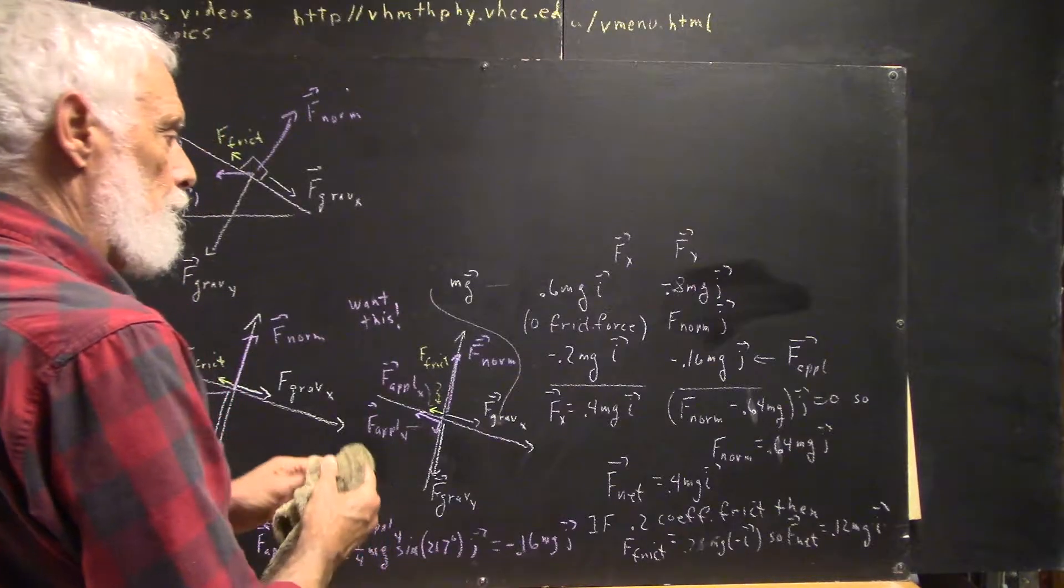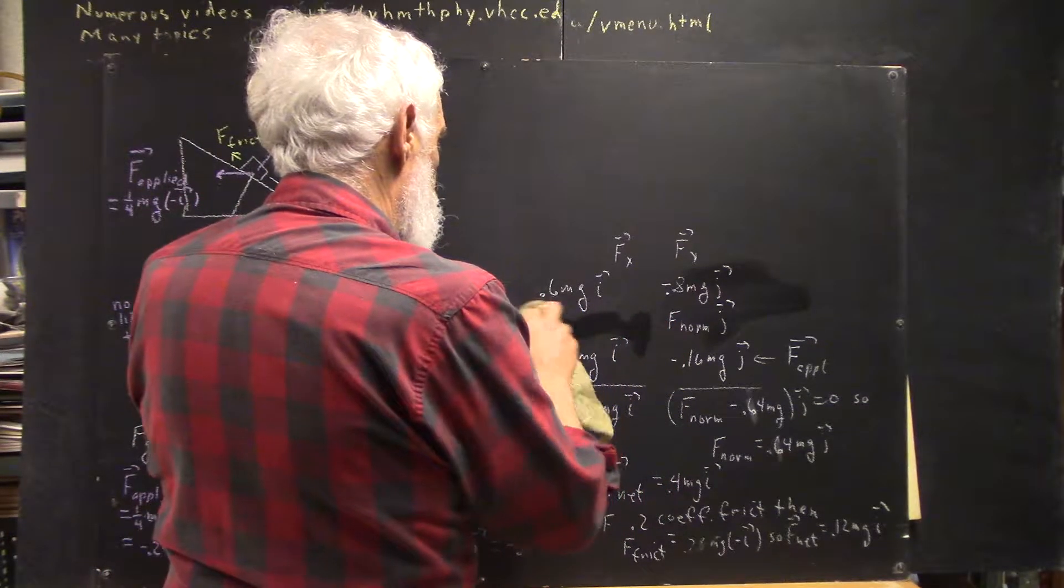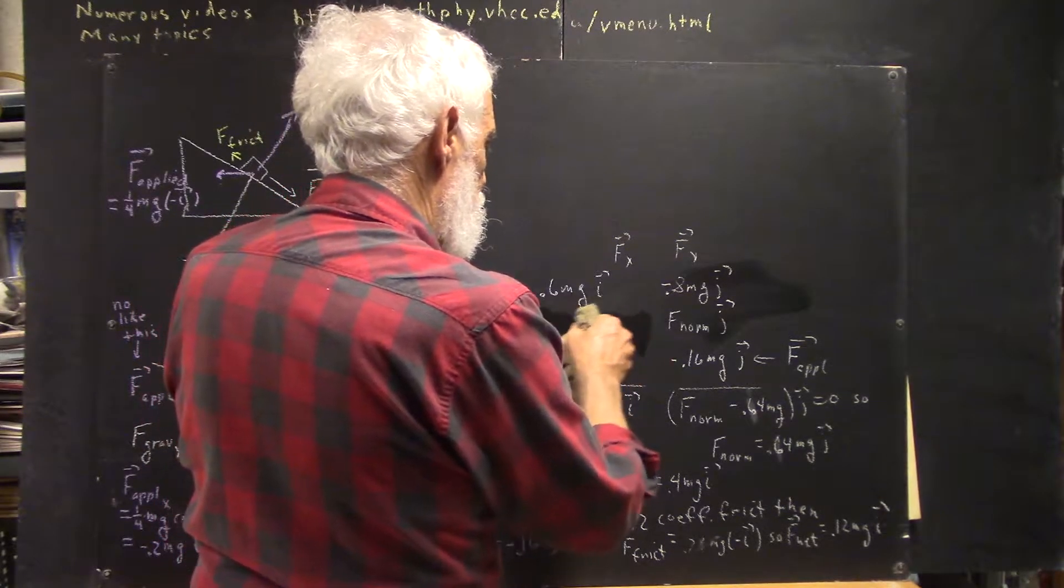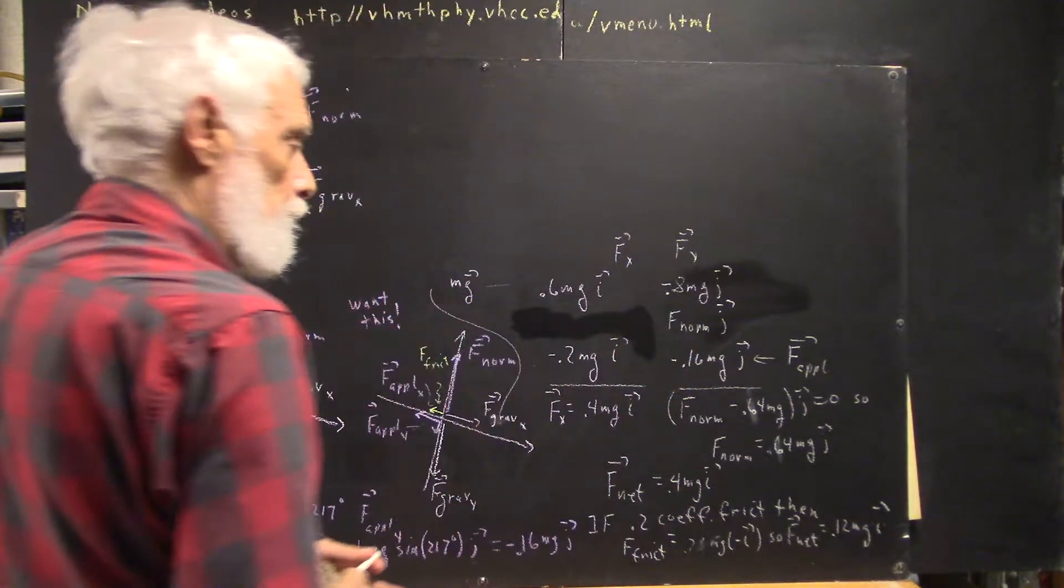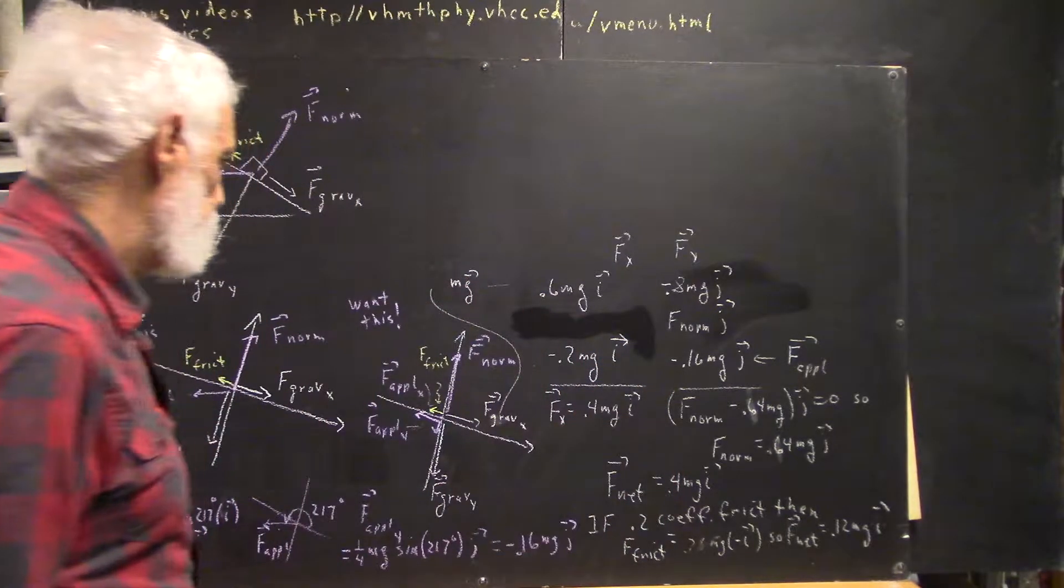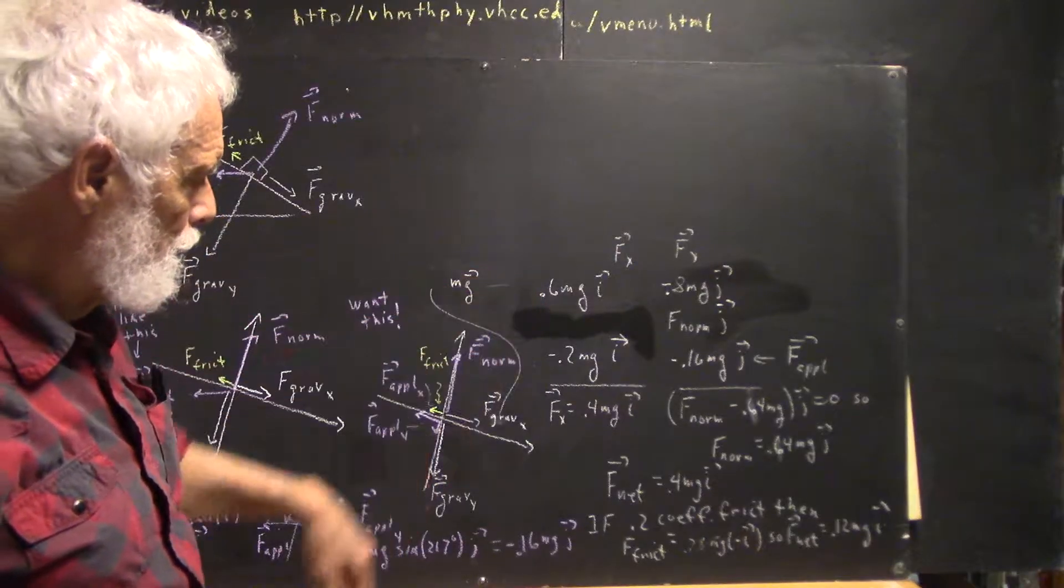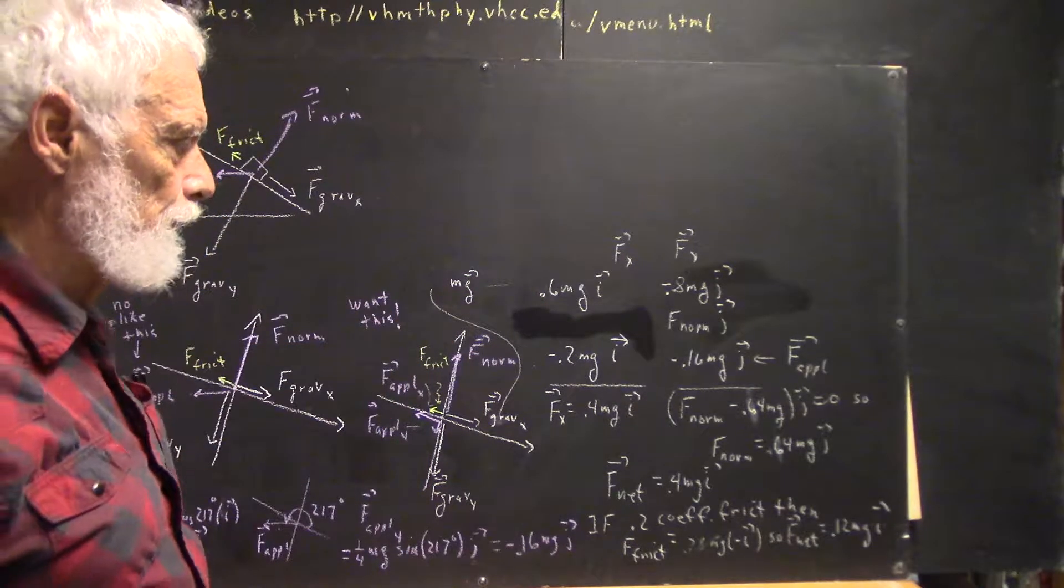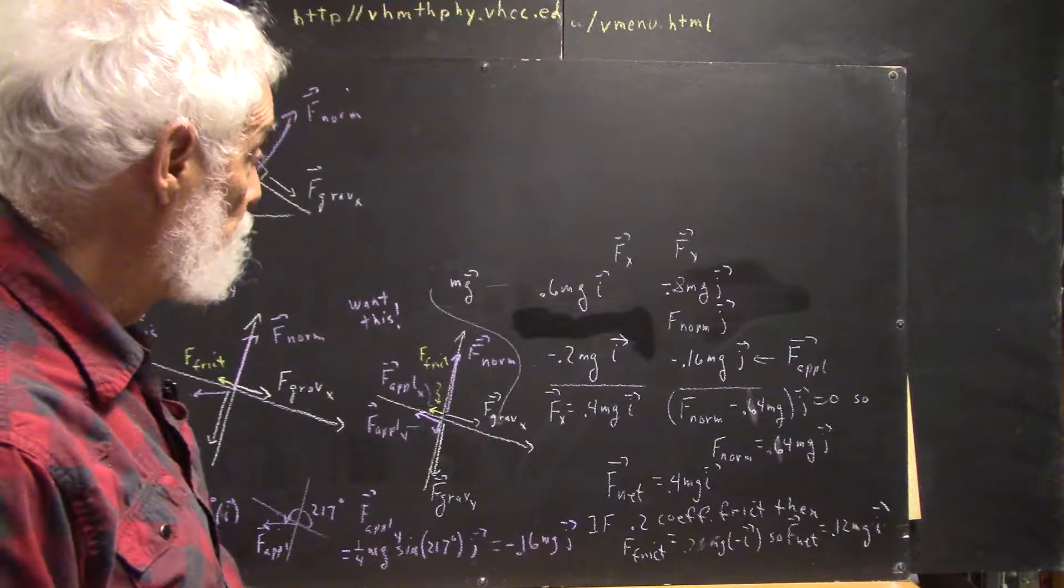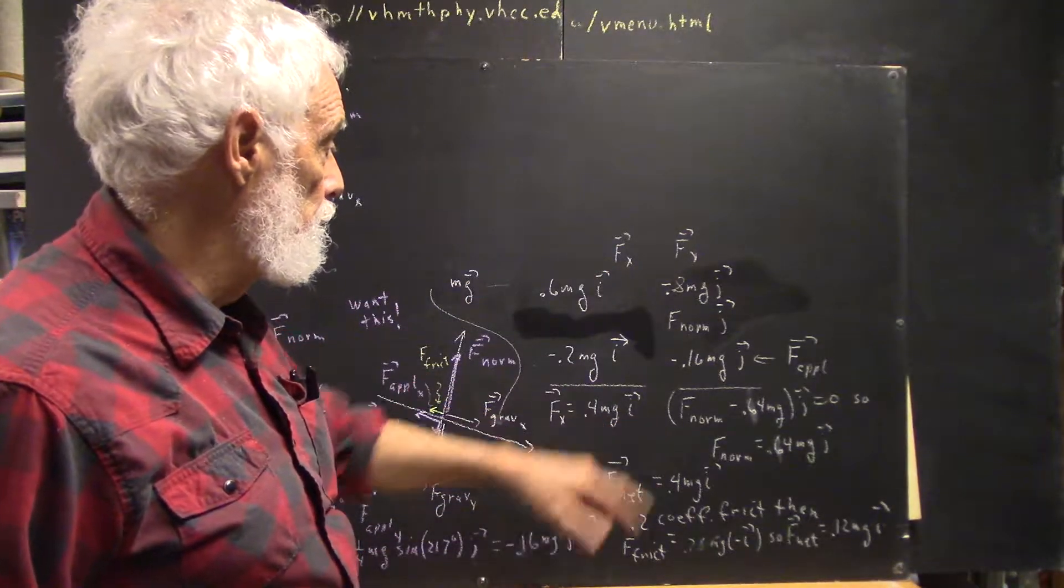I wrote that in there. I'm going to kind of remove that now. I wanted to explicitly reflect the fact that there is no frictional force in this case, but that is part of the... And since I drew a frictional force in here, I kind of needed to do that. I should maybe erase that frictional force out, but I'm not going to. Anyhow, I add the x forces together, I get 0.4 mg times i.